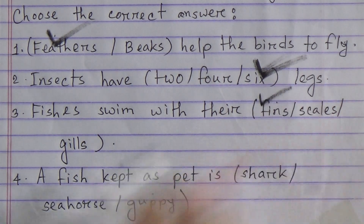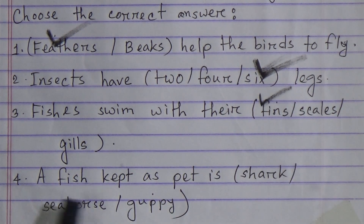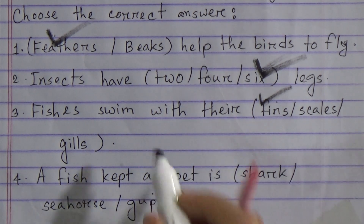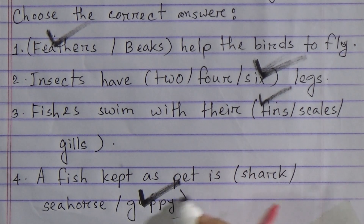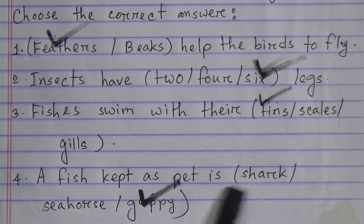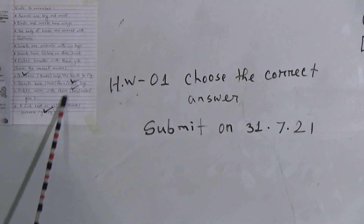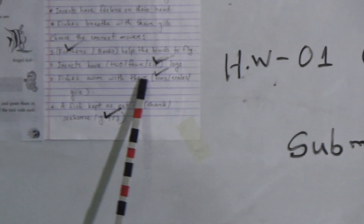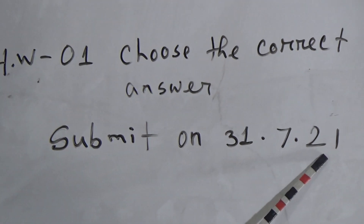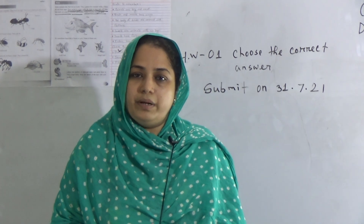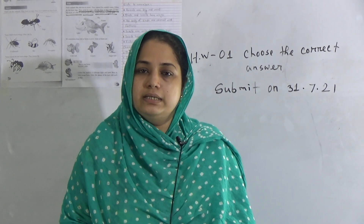Number four: a fish kept as a pet — shark, seahorse, or guppy? Guppy is a fish kept as a pet, so put a tick mark on option 'guppy.' This is your SW today — choose the correct answer and submit this SW on 31/7/21. My dear students, I hope all of you have understood today's topic. Memorize properly. See you again in the next class.